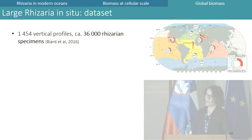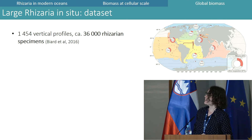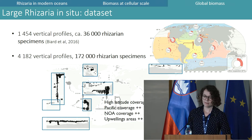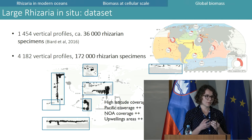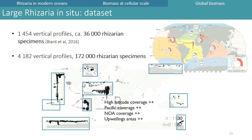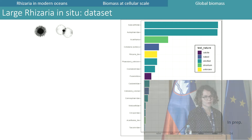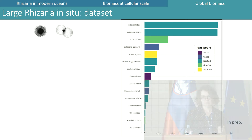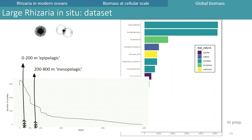In 2016 a first global Rhizaria biomass assessment was made with about 36,000 specimens. Now this dataset is much larger, with up to five times more specimens, including many more profiles in previously under-sampled areas such as high latitudes, the Pacific, and upwelling areas. The dataset is dominated by two Phaeodarian families, Aulacanthidae and Challengeridae, both with a silicified test, followed by the Radiolarian Acantharia and Collodaria. Most profiles allow estimation of biomass down to the mesopelagic layer, so the dataset was divided into epipelagic and mesopelagic layers to distinguish two different ecologies.